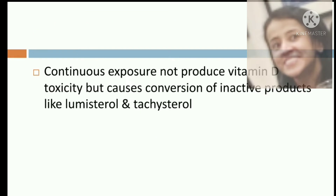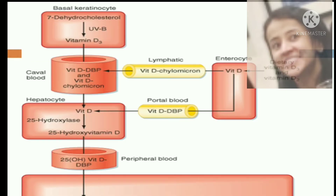Continuous sun exposure does not produce vitamin D toxicity because it causes conversion of vitamin D into inactive products like lumisterol and tachysterol. The diagram also shows the conversion of vitamin D and the formation of its active form.